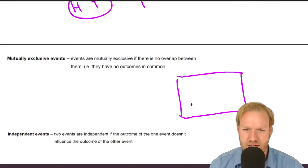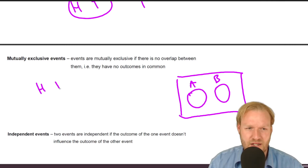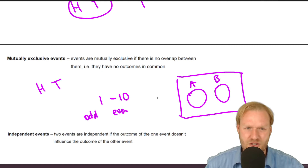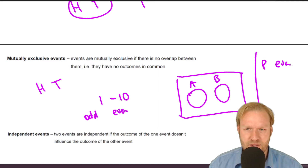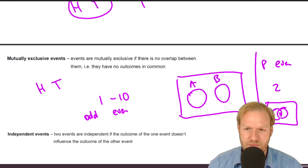Mutually exclusive events have no overlap — you often think about this with an Euler diagram where A and B don't overlap. Heads and tails are mutually exclusive. For numbers 1 to 10, odd and even numbers are mutually exclusive. However, prime numbers and even numbers are not, because 2 is both prime and even — it would sit in the middle of a Venn diagram.